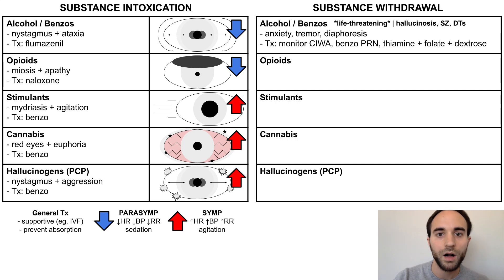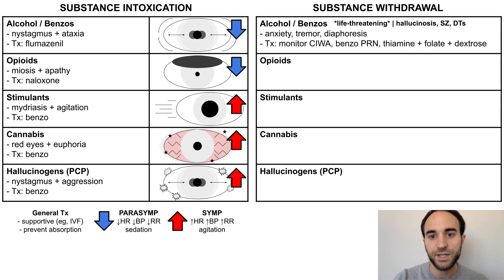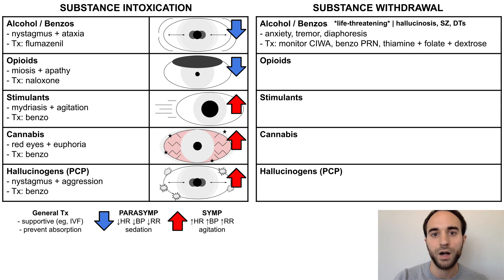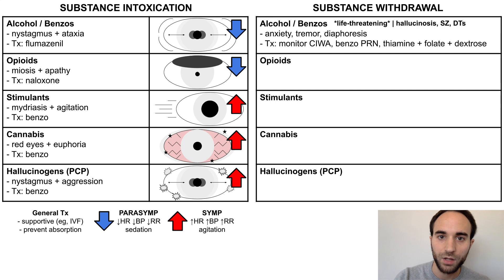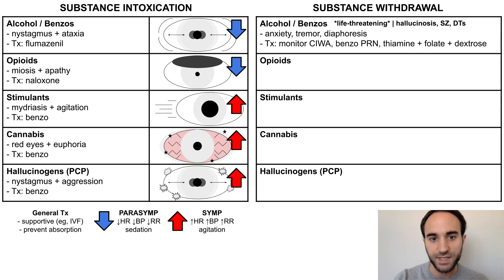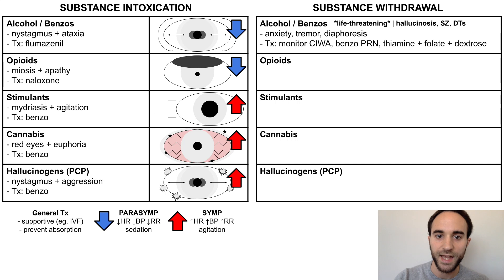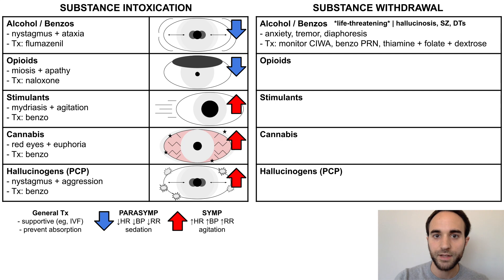Keep in mind that alcohol and benzo withdrawal are the only withdrawal syndromes that are life-threatening, as they can lead to seizures, as well as other severe symptoms, such as alcoholic hallucinosis and delirium tremens. The treatment for alcohol withdrawal involves monitoring symptoms with the CIWA scale, treating with long-acting benzodiazepines as needed to ease withdrawal symptoms, and repleting nutrition with thiamine, folate, and dextrose.